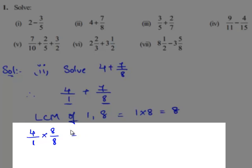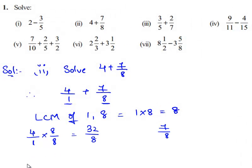We obtain 4 times 8 is 32 divided by 1 times 8 is 8, giving us 32 by 8. The equivalent fraction for 7 by 8 is 7 by 8 itself since it already has the denominator 8.